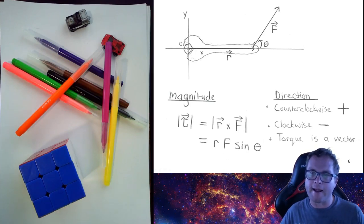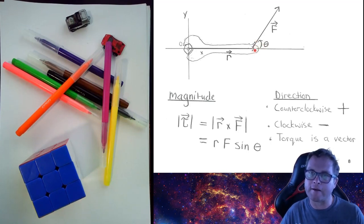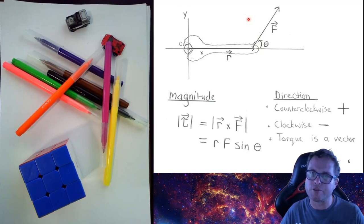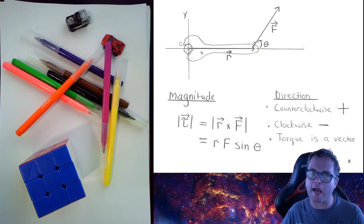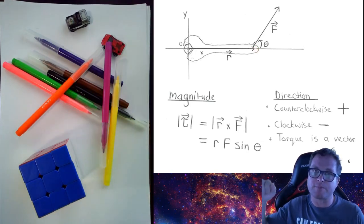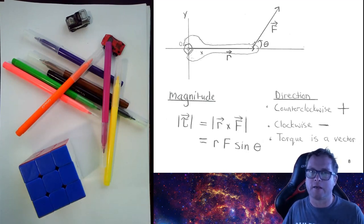For the direction, we use a sign convention: counterclockwise rotation is positive, and clockwise rotation is negative. This convention makes it very convenient to add different torques together. For example, if a force causes counterclockwise rotation of a spanner, that torque is positive. If the force were downward, causing clockwise rotation, the torque would carry a negative sign.